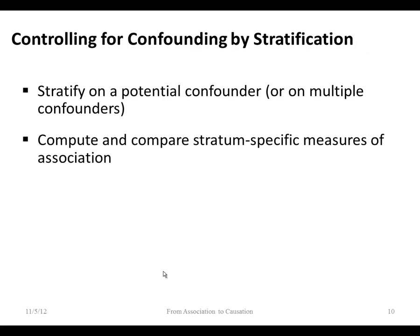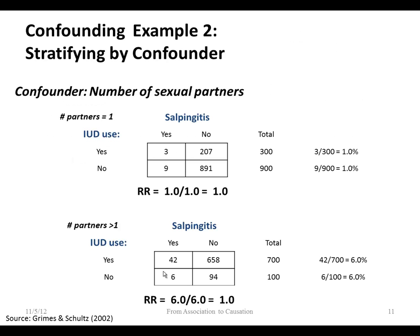How do we stratify? Choose the potential confounder — you can do more than one, though doing them one at a time makes sense. Within each stratum, compute and compare the stratum-specific measure of association. We'll walk through the IUD example. Our confounder of concern is number of sexual partners, so we divide the group into those who have had just one partner and those who have had more than one partner, then do the same analysis.